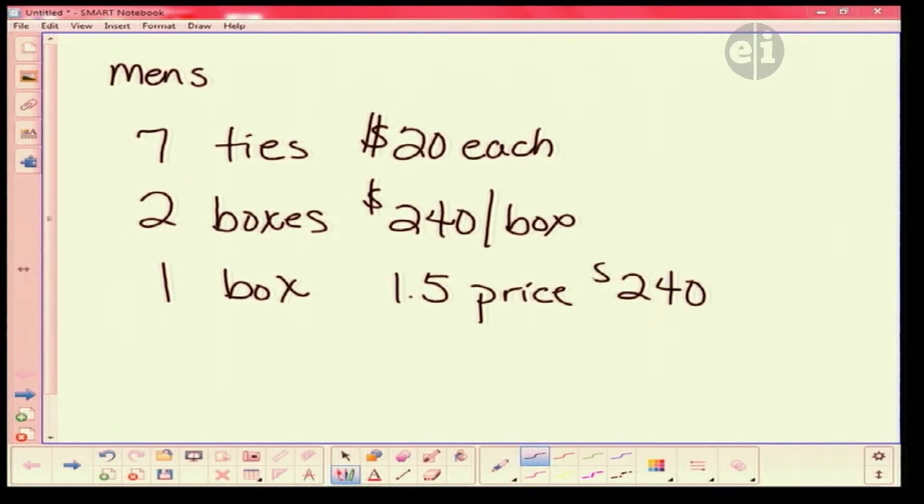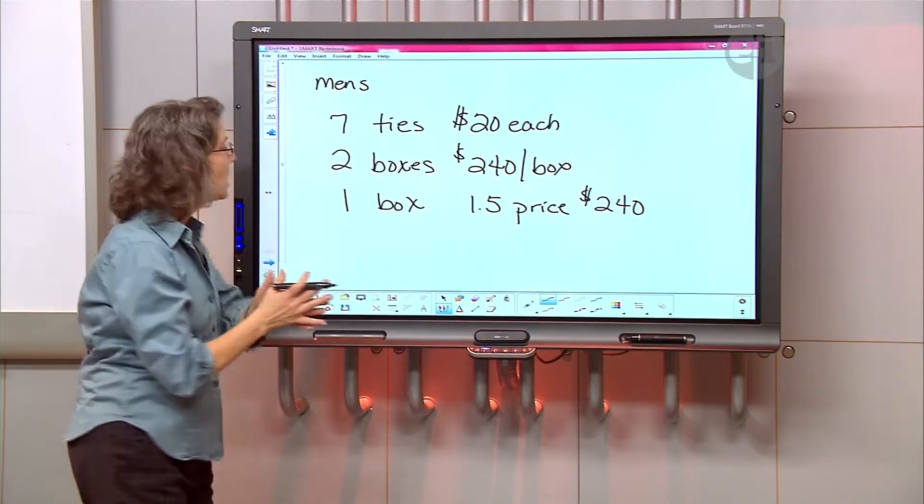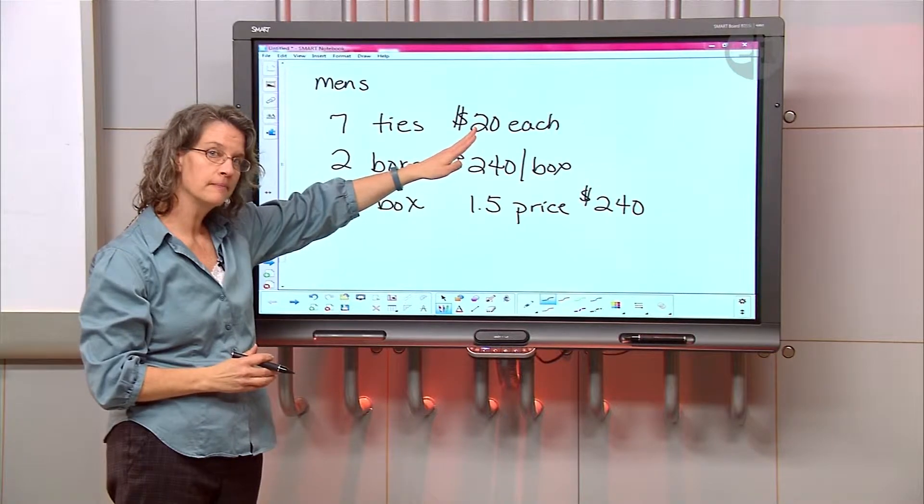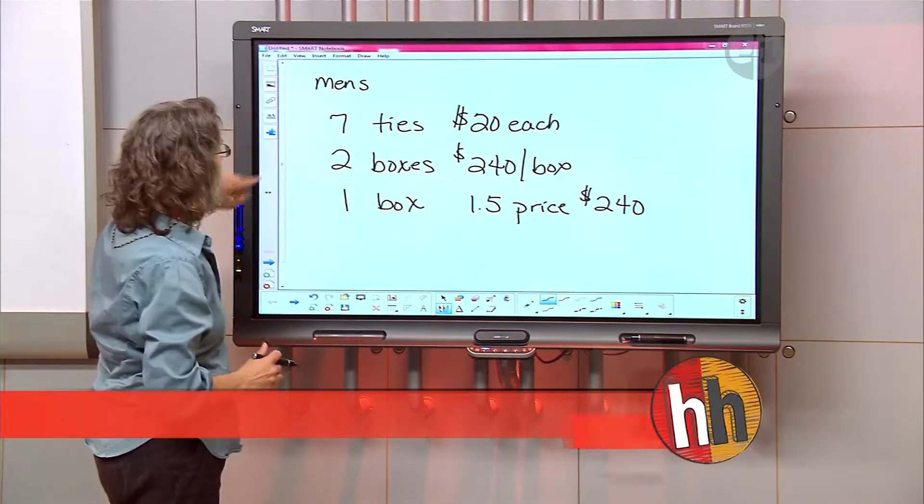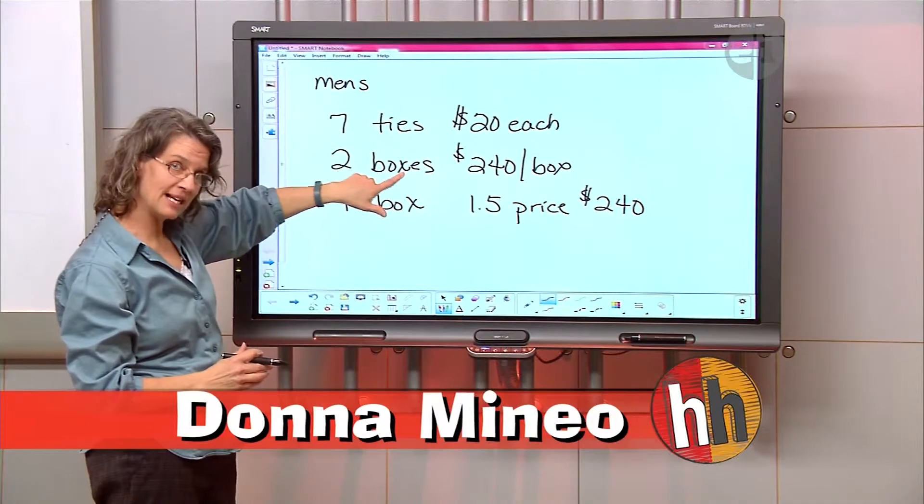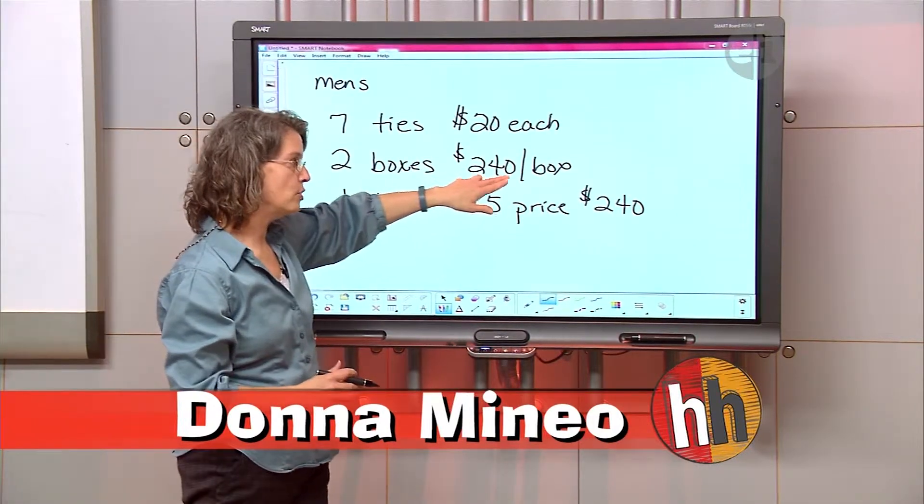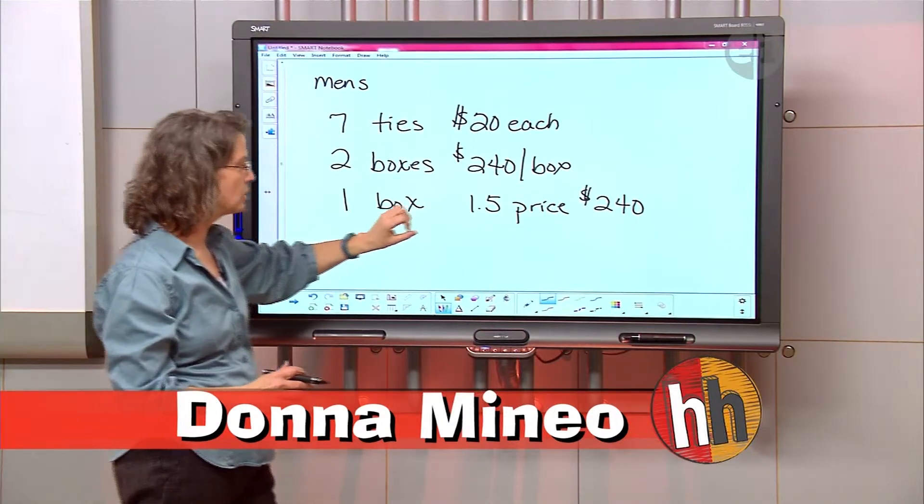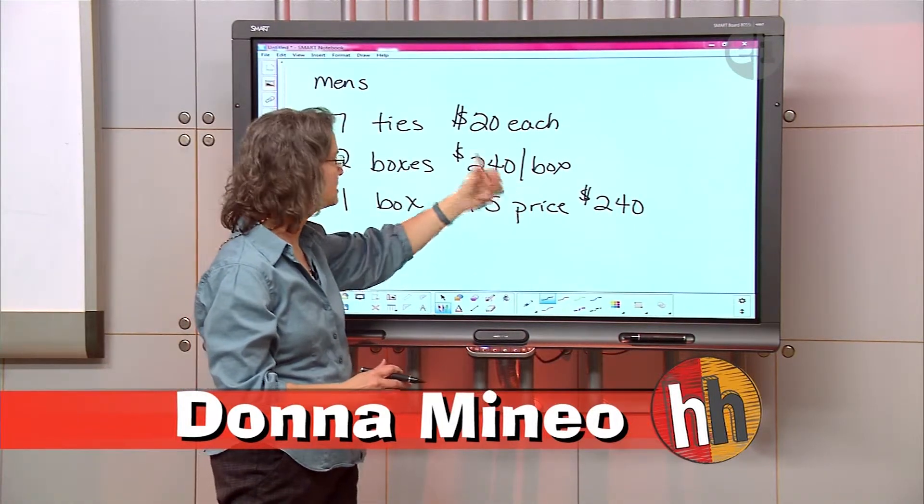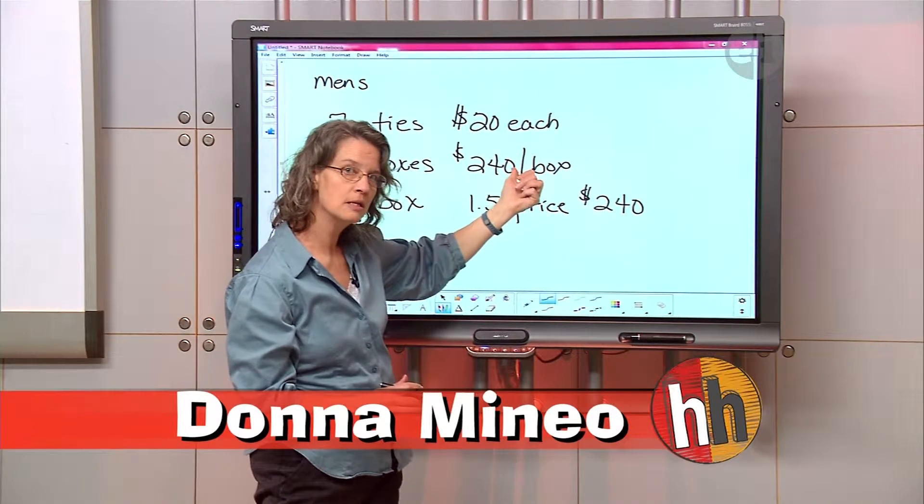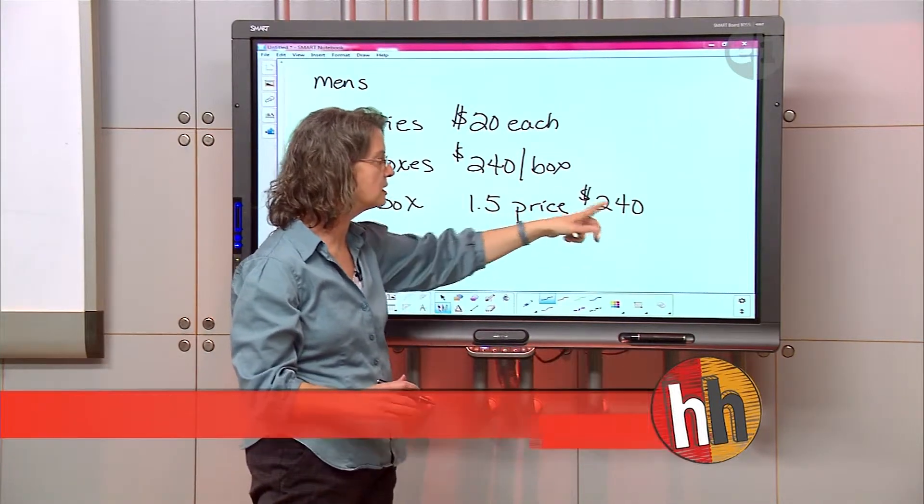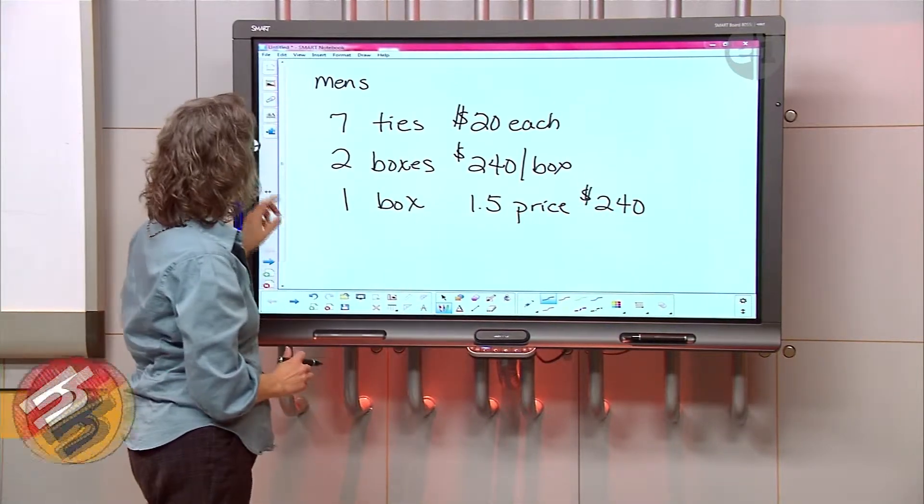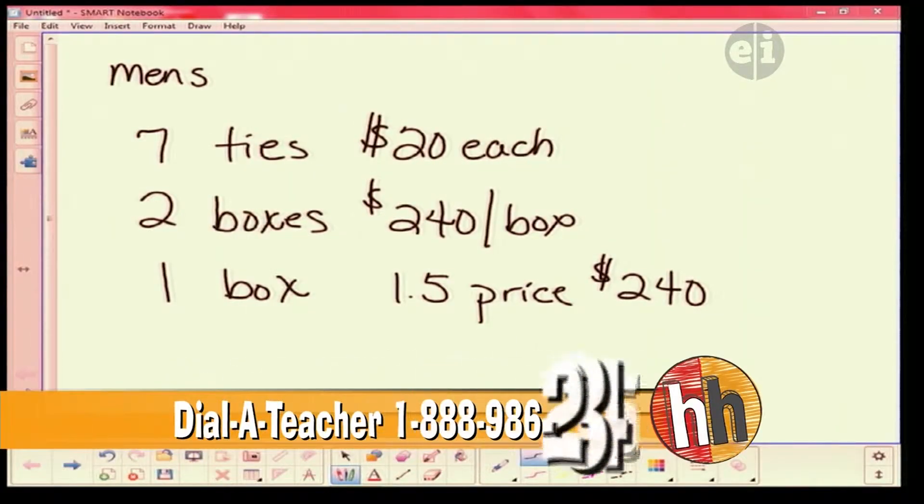Let me double check everything before we do the math. First, I have seven ties at $20 each. You're sure? And then you have two boxes at $240 per box. And then you have one box that's going to be one and a half the price of the bow ties. So one and a half times the $240, correct? And we have to find out the total? Yes.